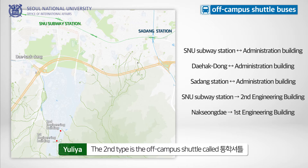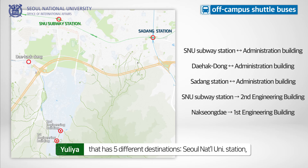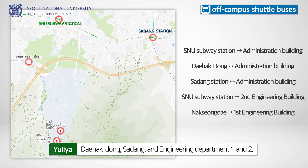The second type is the off-campus shuttle called the Tonghak shuttle, which has five different destinations: Seoul National University Station, Daehakdong, Sadang, and Engineering Department 1 and 2.